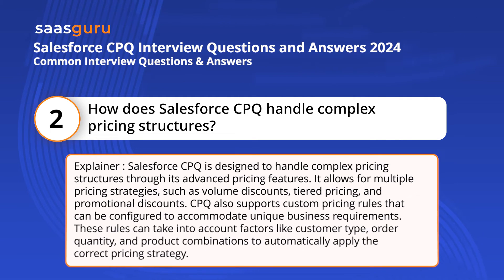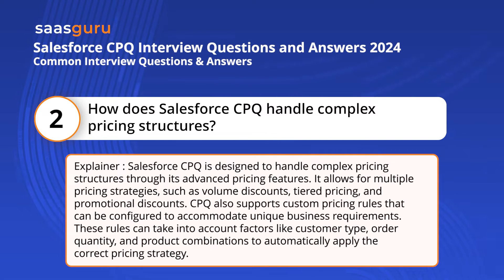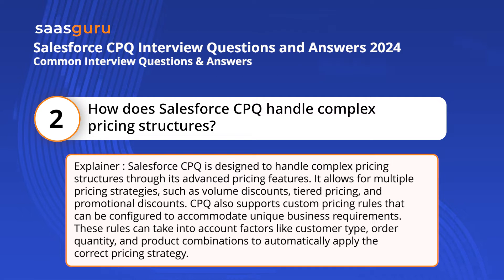Salesforce CPQ is designed to handle complex pricing structures through its advanced pricing features. It allows for multiple pricing strategies such as volume discounts, tiered pricing, and promotional discounts. CPQ also supports custom pricing rules that can be configured to accommodate unique business requirements, taking into account factors like customer type, order quantity, and product combinations to automatically apply the correct pricing strategy.